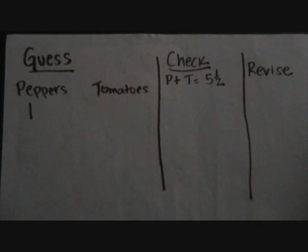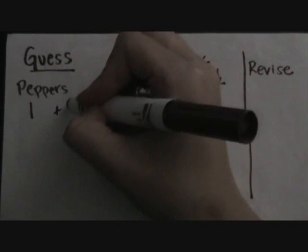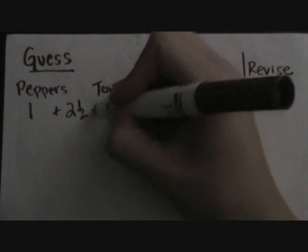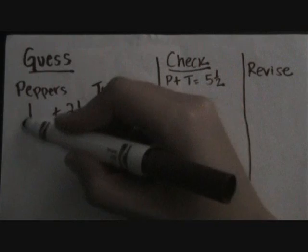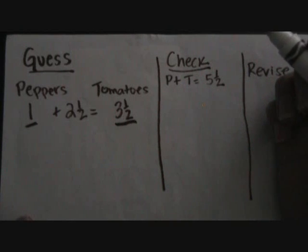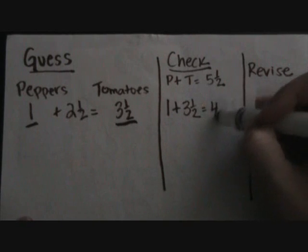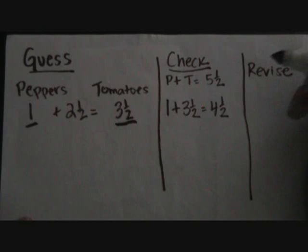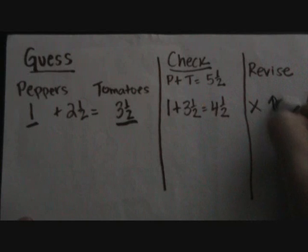The data tells me that she uses two and a half cups more tomatoes than peppers. So to find out how many tomatoes she uses, I would take one — the number of peppers I guessed — plus two and a half. One plus two and a half gives me three and a half. So if she uses one cup of peppers, she would have used three and a half cups of tomatoes. To check, I add one plus three and a half, which gives me four and a half. The total should have been five and a half, so my guess is wrong and I need to go higher.